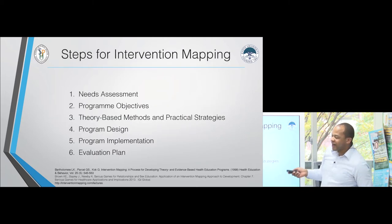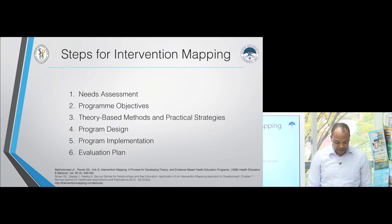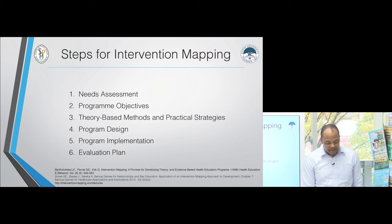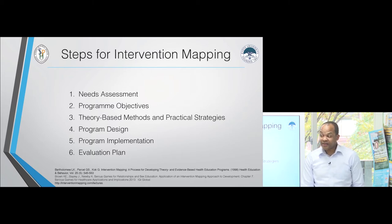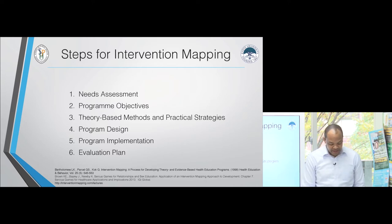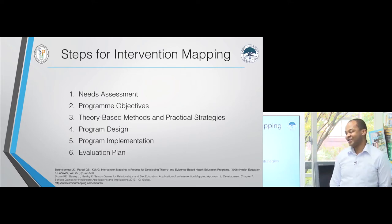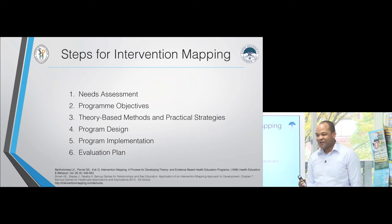Here are the six steps involved in intervention mapping: the first is needs assessment, the second is program objectives, the third is theory-based methods and practical strategies, the fourth is program design, the fifth is program implementation, and the sixth is the evaluation plan.